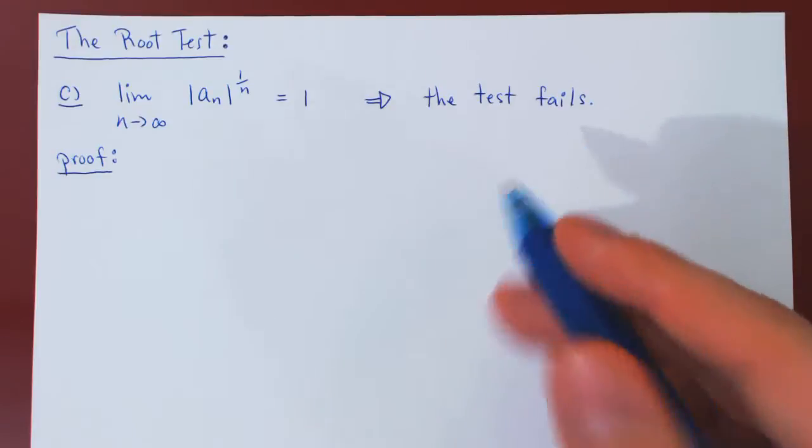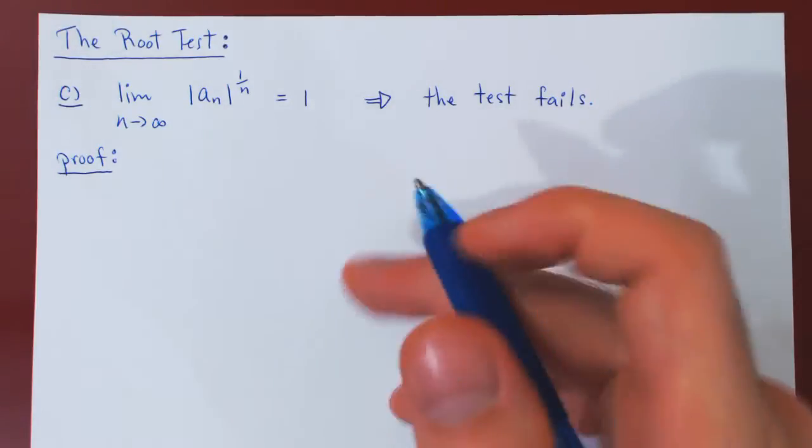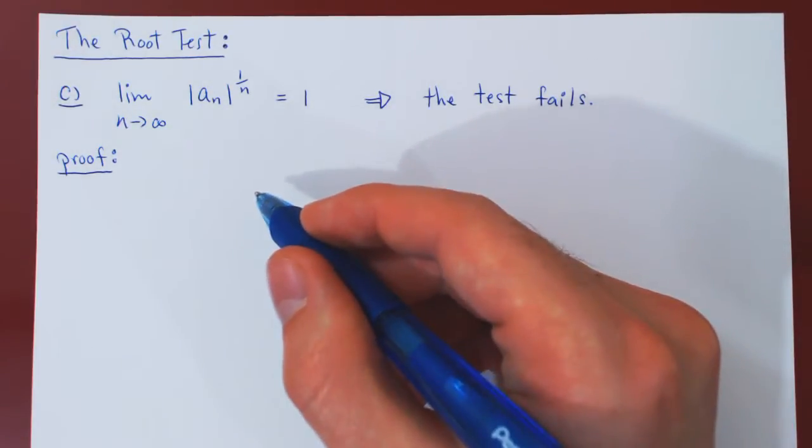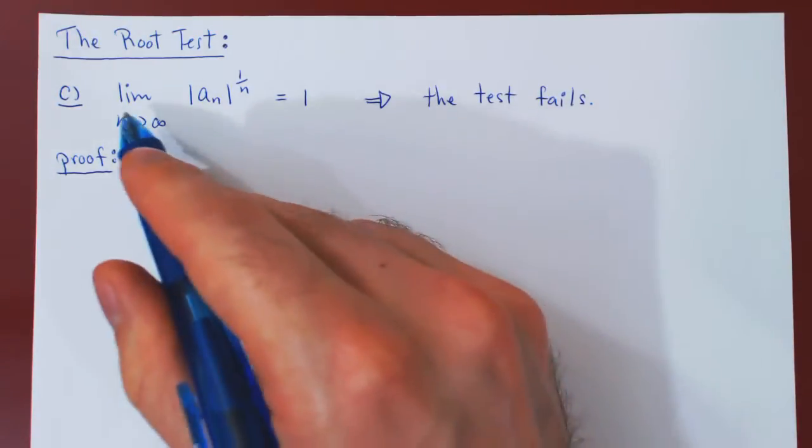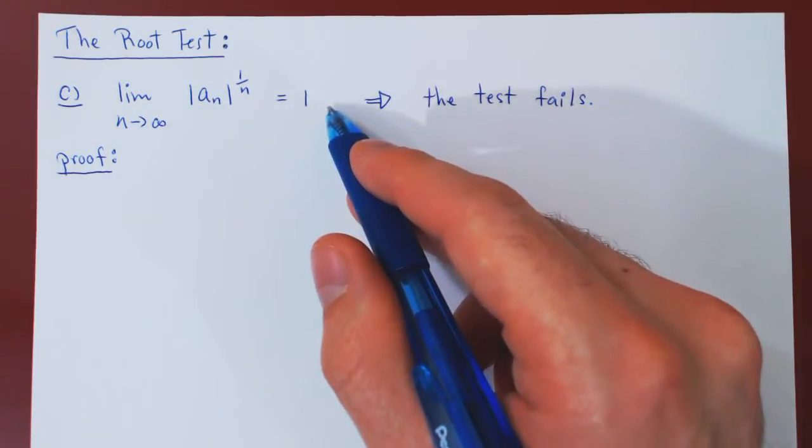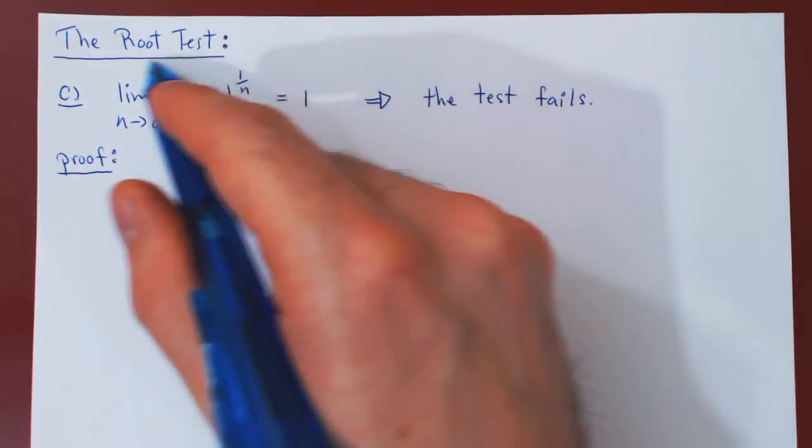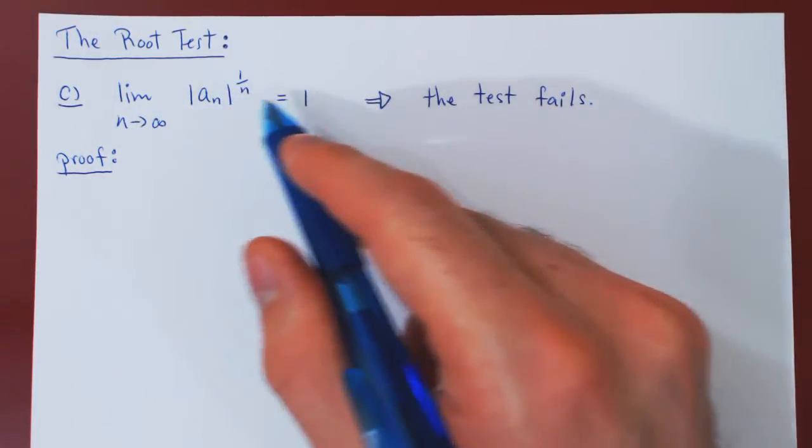To prove this, we'll simply show two examples where one series converges, one series diverges, and yet in both cases, the limit is equal to 1, hence proving that we cannot reach any conclusion when the limit is 1.